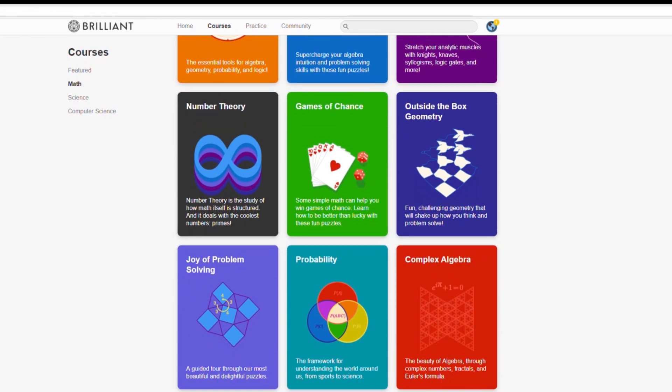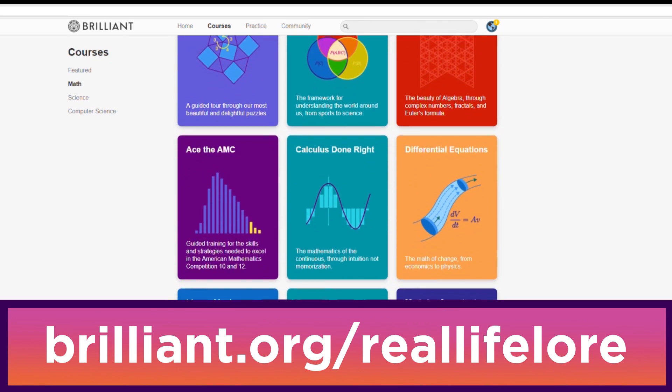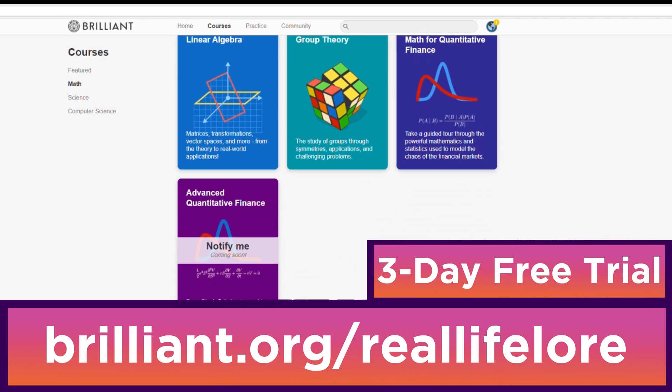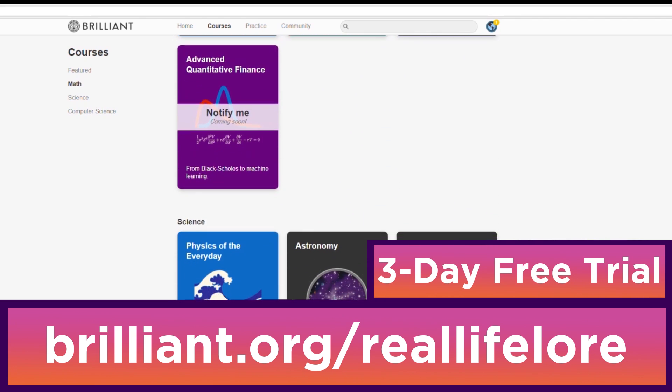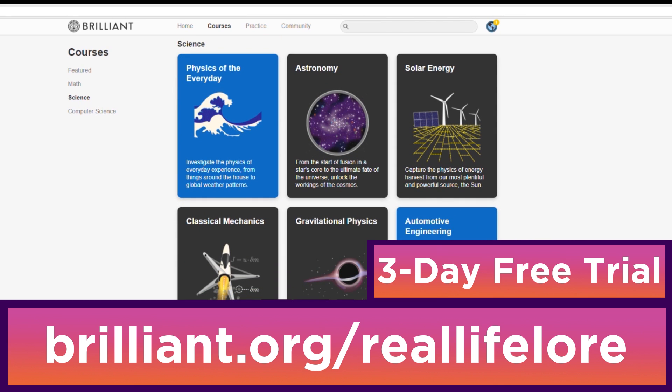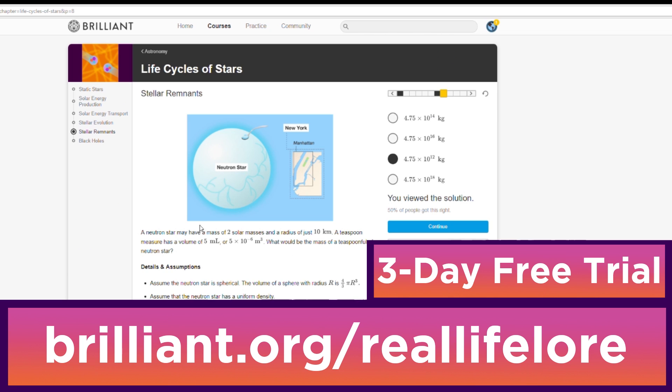You can learn about astronomy and a vast amount of other subjects at Brilliant.org slash RealLifeLore. And best of all, Brilliant is offering a three-day free trial exclusively to the viewers of this video. This free trial is only available if you click on the Brilliant.org slash RealLifeLore link in the description of this video. So if you liked what you just watched and you're curious to learn more, you should give Brilliant a try. It's completely free for three days, and you'll be supporting my channel at the same time. Cheers!